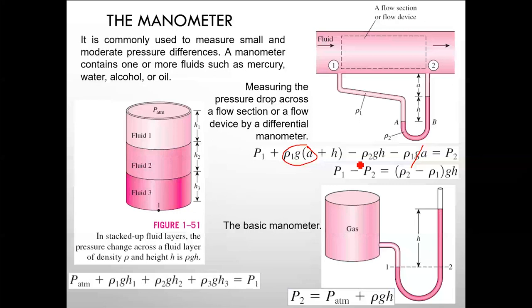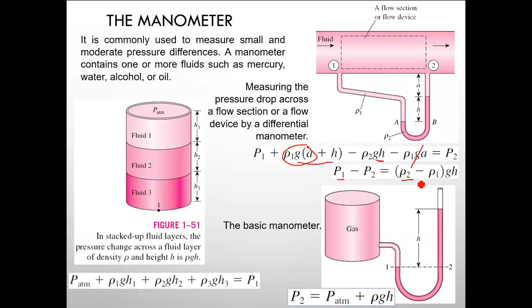So the pressure difference P1 minus P2 equals the difference in densities times g times h. If you know P1, the densities of both fluids, and can measure height h, you can calculate P2. The two fluids have different densities — up to point A the fluid is fluid one, identifiable by color.